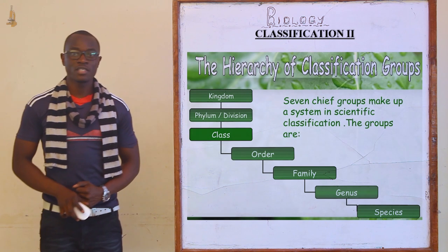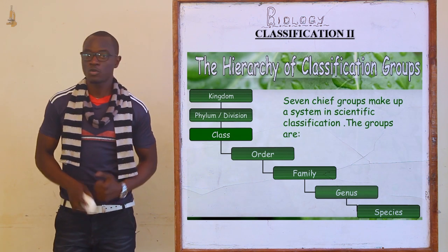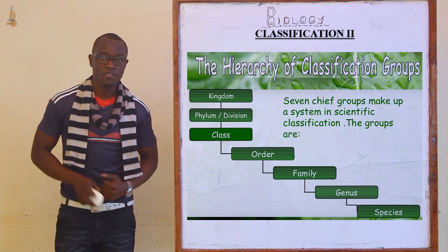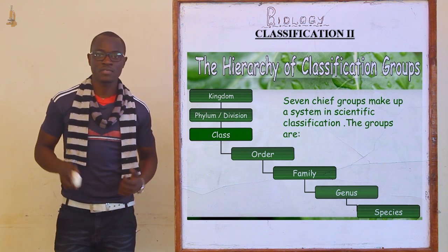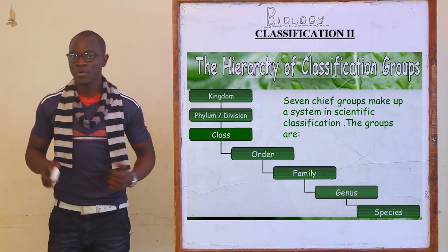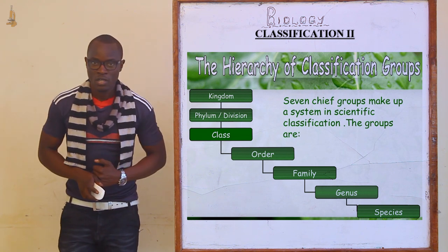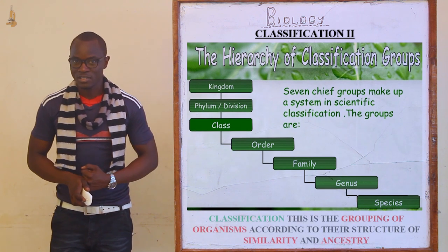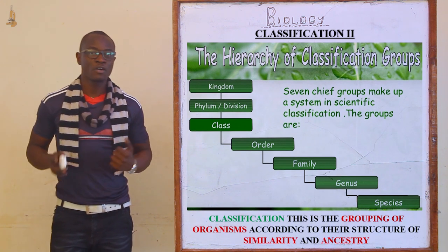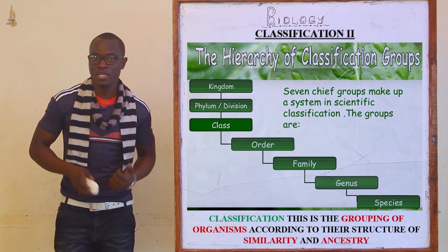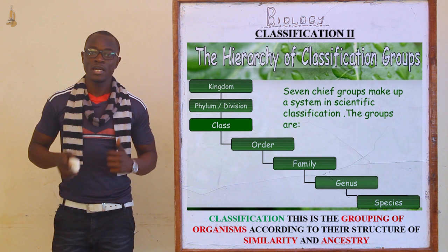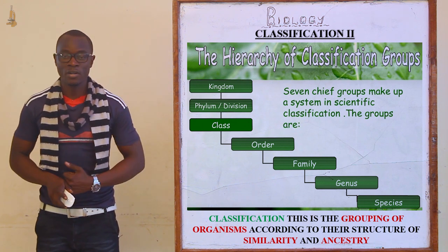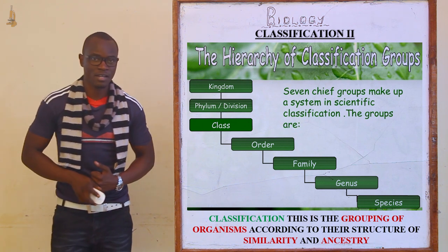Welcome to this class, where today we want to discuss classification 2. In Form 1 we did classification 1, and now we are going to look at classification 2. Classification is defined as the grouping of organisms and placing them into correct groups based on ancestry, behavioral characteristics, and adaptations.